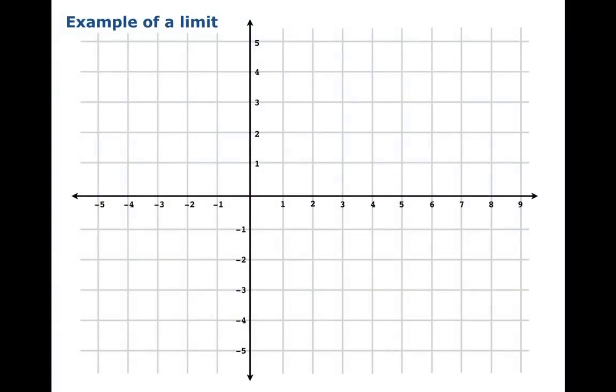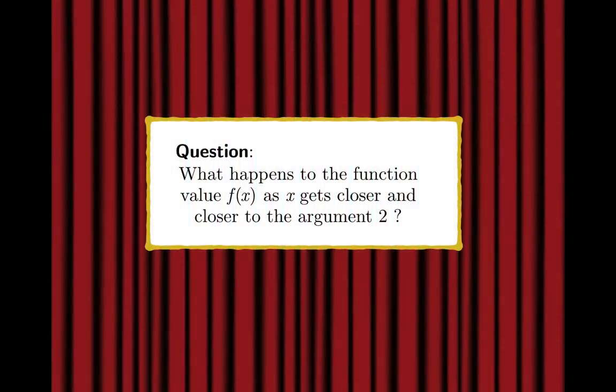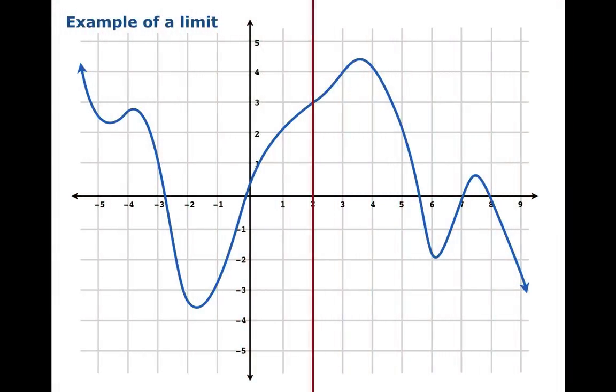Here's the Cartesian plane, and we're going to drop a curtain over it. Behind the scenes, we've plotted a function, and the question is, what happens to the function value f of x as x gets closer and closer to the argument 2? So what we're going to do is draw in the curtain slowly from the outside in all the way to the argument x equals 2, and we'll watch what happens to the function value.